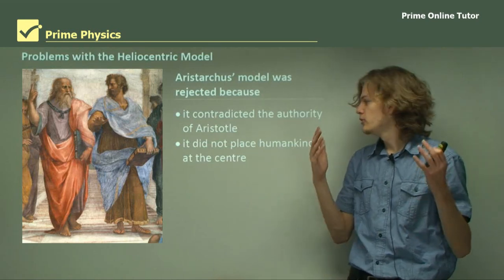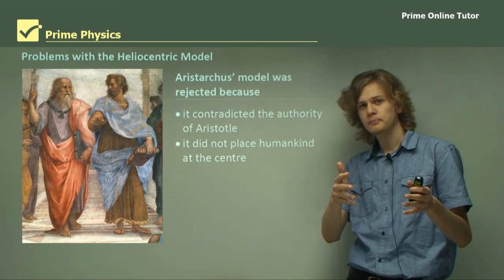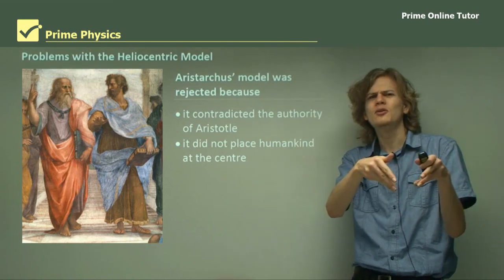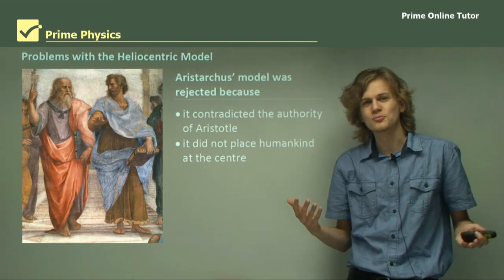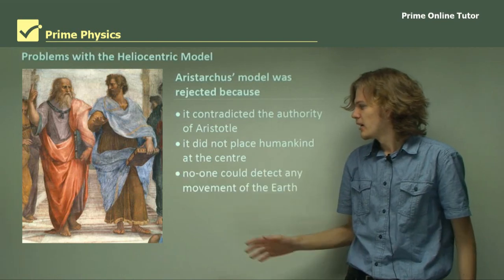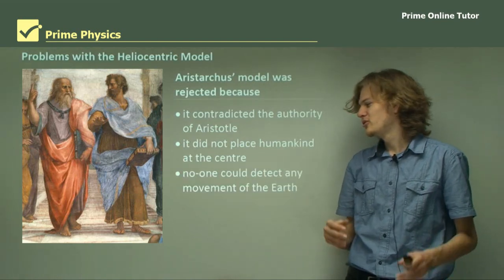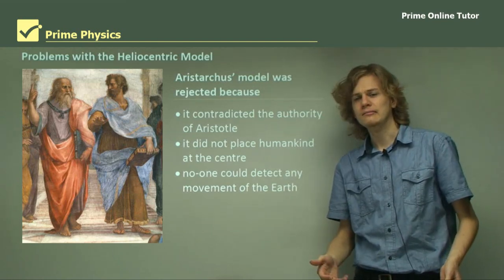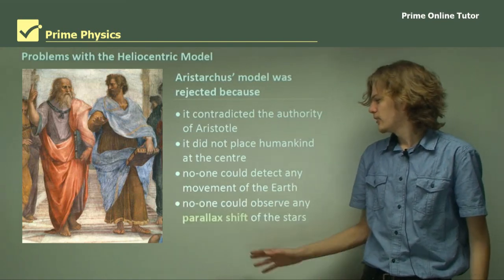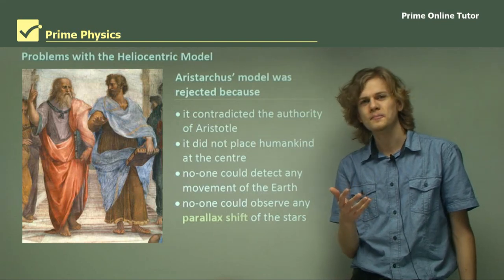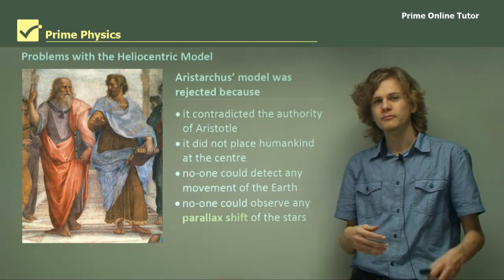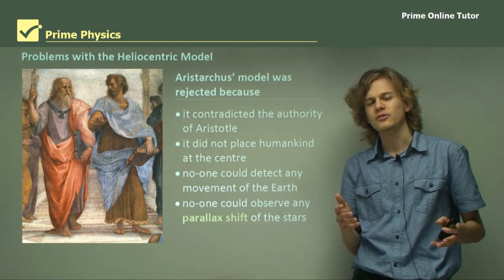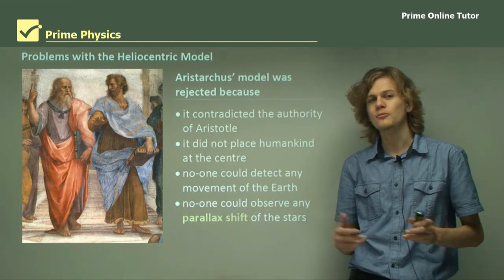Aristarchus's model did not put humankind at the center. Humans always think that very important, so we like to be right in the center of the universe, but Aristarchus's model didn't allow for that. Another reason it was rejected is that no one could detect any movement of the Earth. And finally, no one could observe any parallax shift of the stars, which the ancient Greeks expected if the heliocentric model was correct.